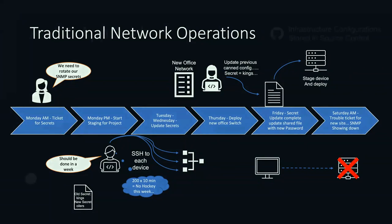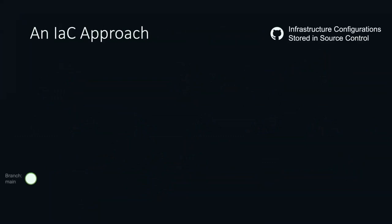So if we look at that same process when we approach it from an infrastructure as code approach — for this scenario, I'm going to store my code and my infrastructure has been defined. It's already running, my main production environment is set, and I've uploaded it into source control. So our team manages all of the infrastructure, and it's just stored in a GitHub repo for this example.